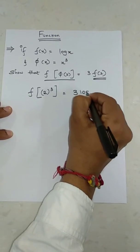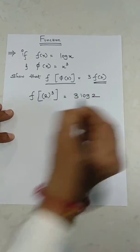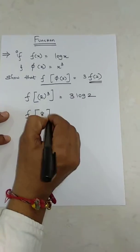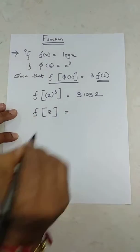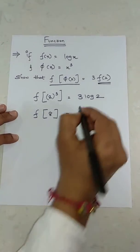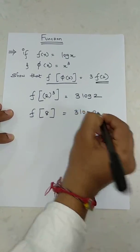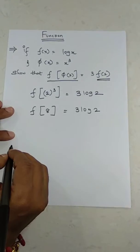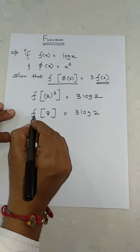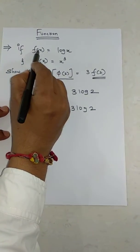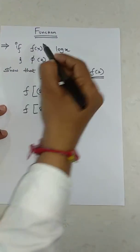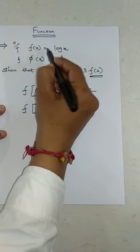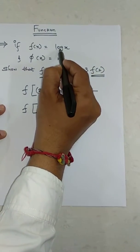So this will be equal to f(8) = 3 log 2. Now f(8): since f(x) = log x, and x is 8, f(8) = log 8.